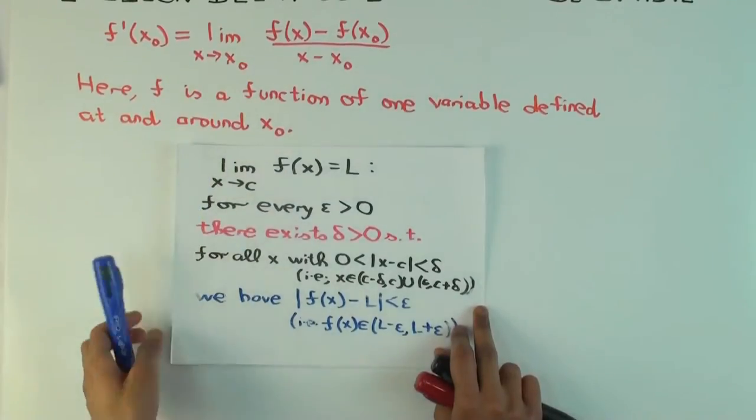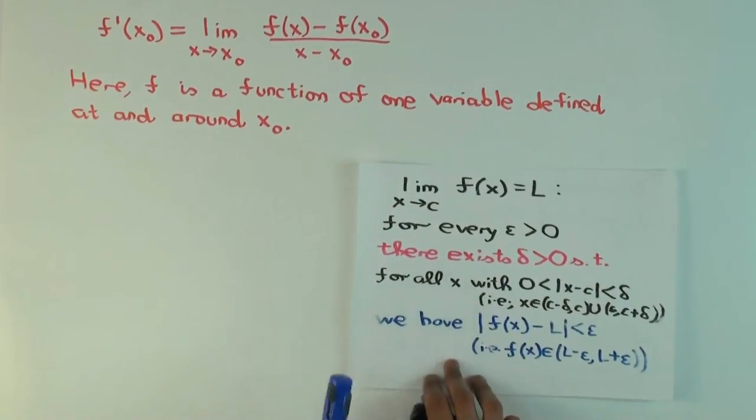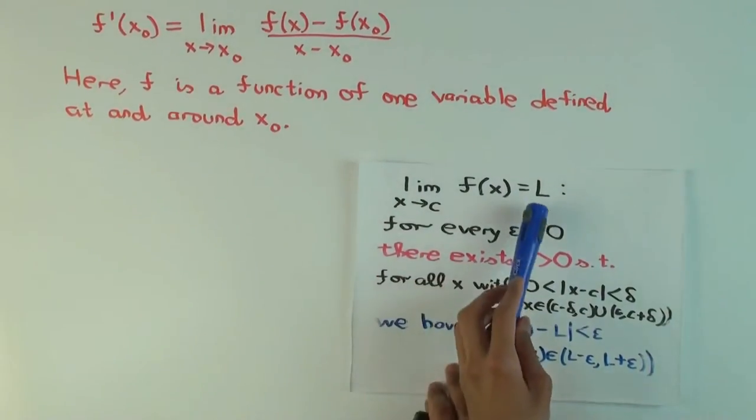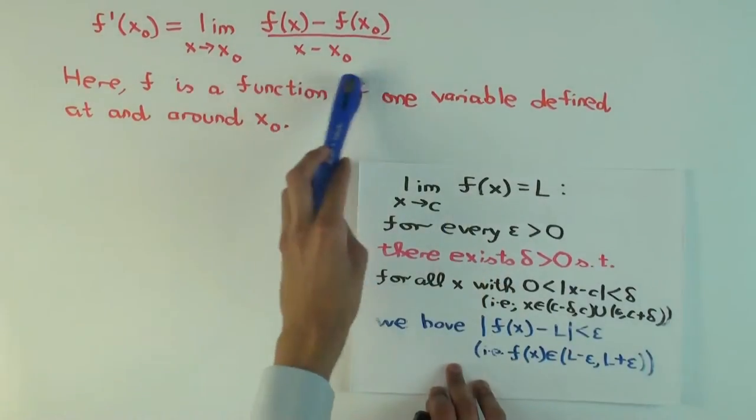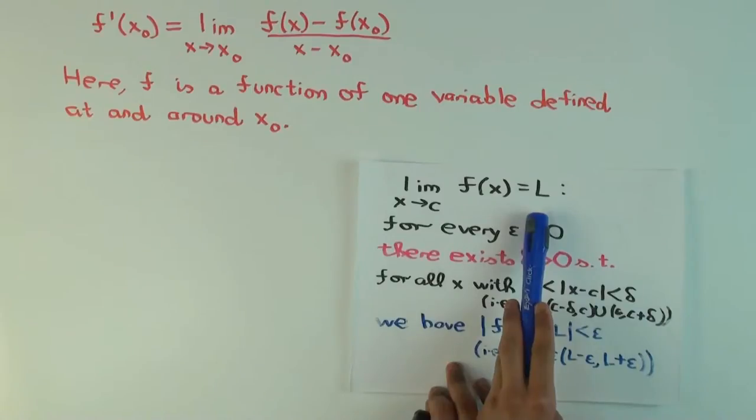Okay? And let's work this out, and it's an instructive exercise, trying to work out what this would say. Okay, so what is the c and the l in here? The c is? X naught. X naught, and the l is?